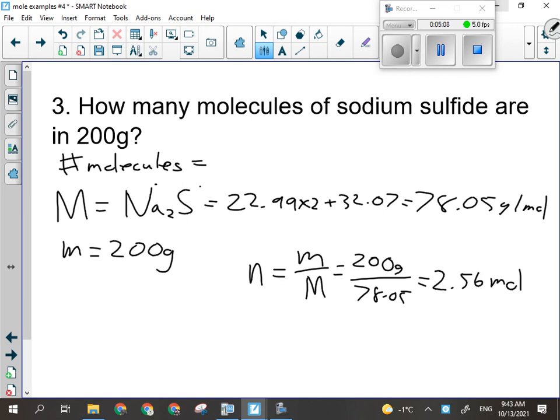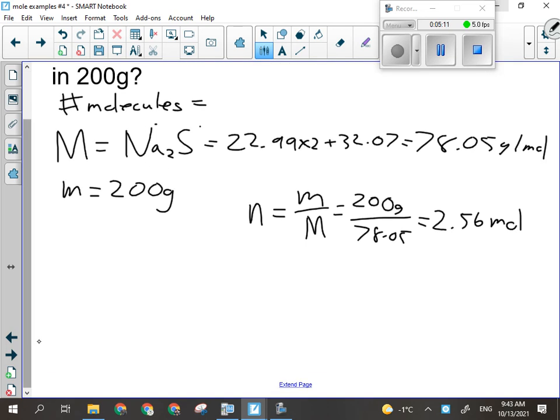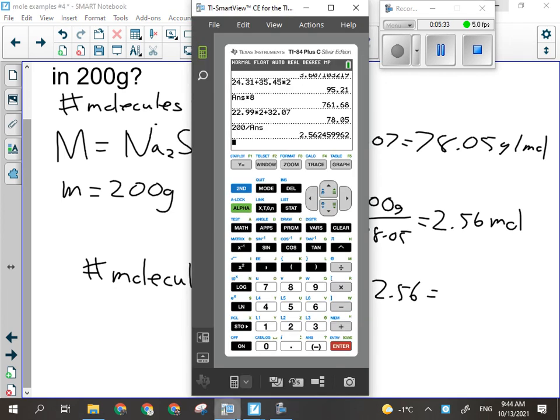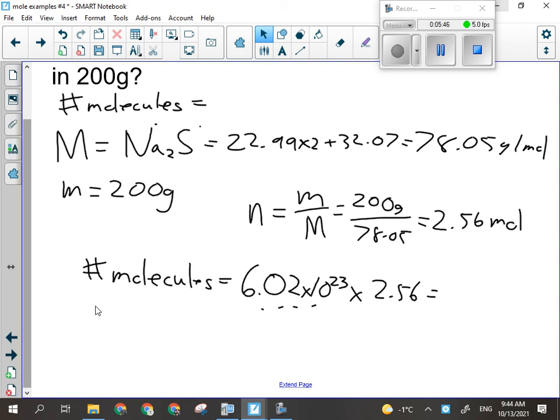All right, so now that I have the number of moles, I need to find the number of molecules. Luckily, I know how many molecules are in one mole. It's this many, Avogadro's number. If I multiply by, if I multiply the number of molecules in one mole, this number, by the number of moles, I will get the number of molecules. All right, so we're looking at 1.54 times 10 to the 24 molecules.